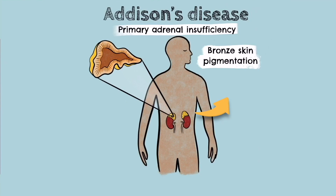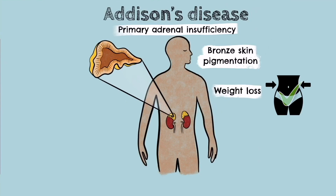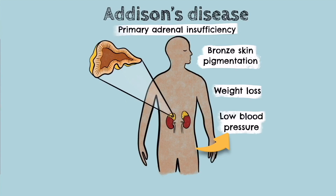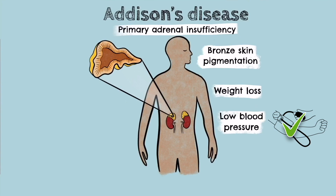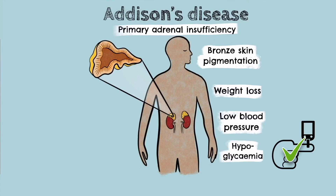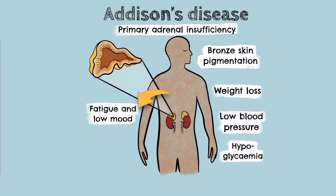Patients with Addison's disease may also experience weight loss as a result of a deficiency in cortisol. A deficiency in aldosterone causes increased urinary sodium loss leading to dehydration, decreased blood pressure and retention of potassium. Patients will also suffer from hypoglycemia due to a deficiency in cortisol causing decreased gluconeogenesis. More generalised symptoms can arise such as fatigue and low mood, generalised weakness, and nausea, vomiting and pain.